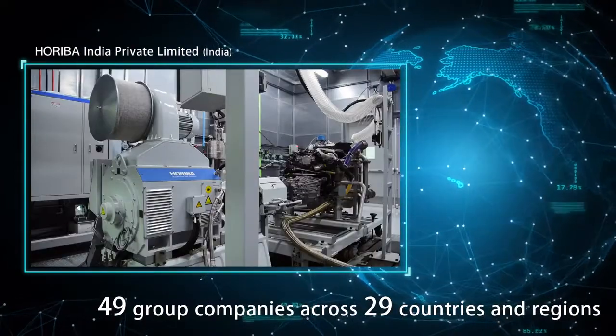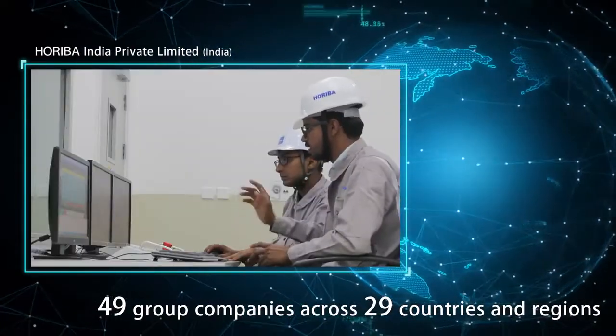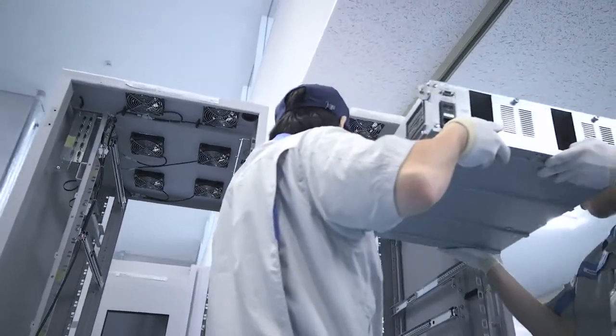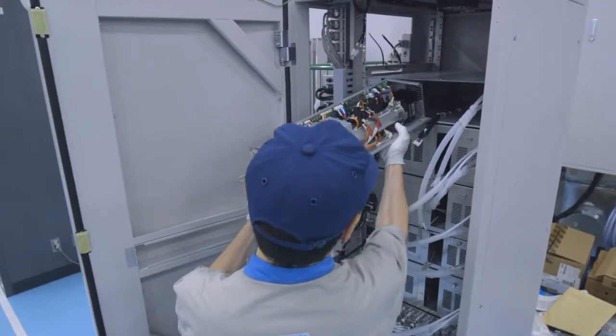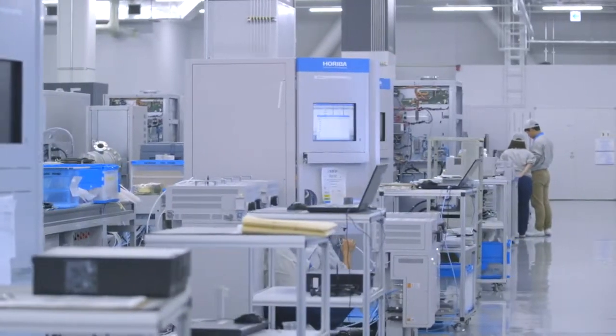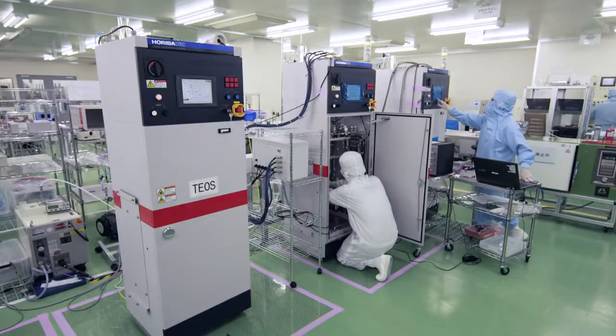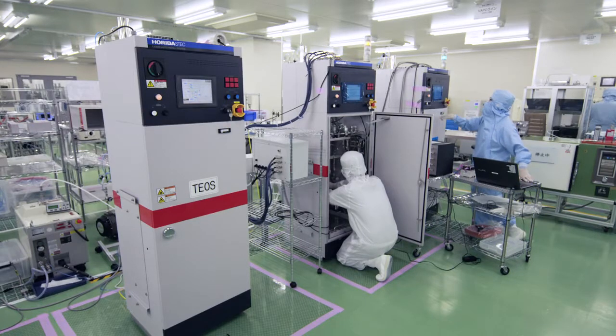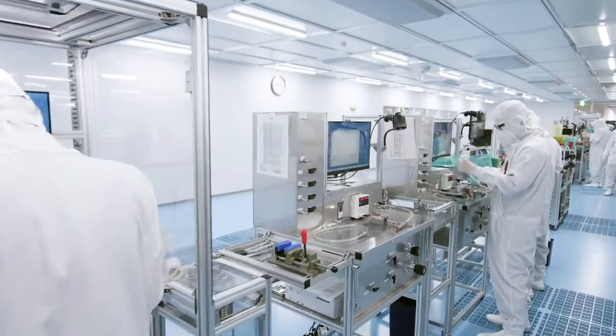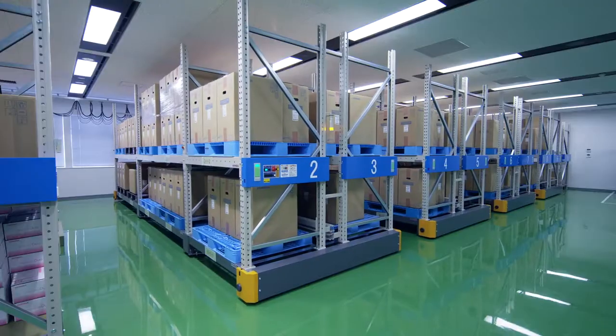The Horiba network is always expanding. In addition to R&D, all manufacturing processes, material procurement, assembly, inspection and shipping are consolidated in our own plants. This enables us to develop and provide high-quality products with a short lead time.